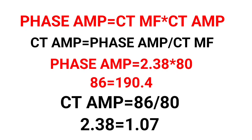So 5% tolerance can be considered for R phase and Y phase, but B phase is defective and we need to change the B phase current transformer. I hope you understand the concept. If you like this video, please press the like button. We will meet in the next video. Thanks for watching.